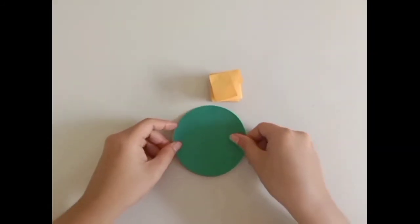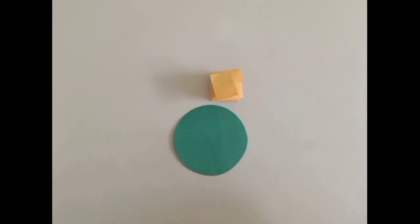Next, get the large circle and glue the folded paper in the center and set it aside.